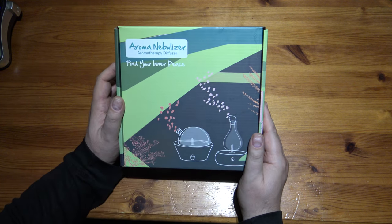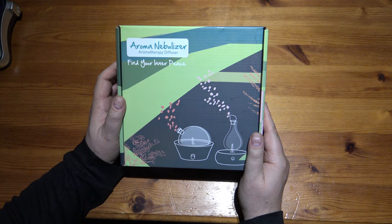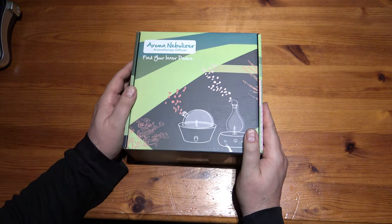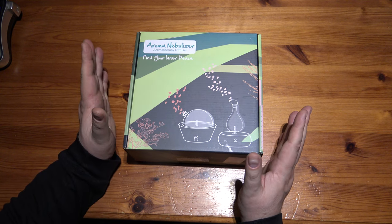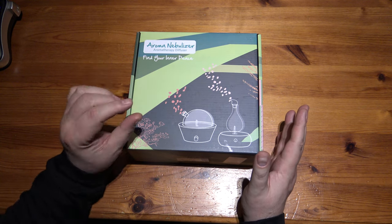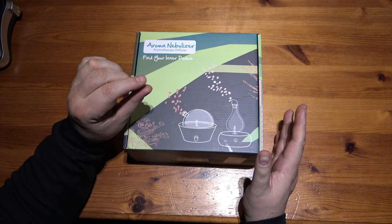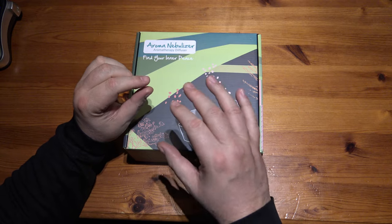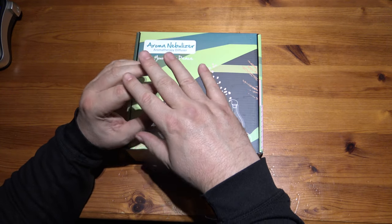Hello, welcome to another unboxing. This time, find your inner peace with an aroma nebulizer aromatherapy diffuser. There are quite a few different types on the market. The most common one has a little ceramic disc at the bottom that vibrates really fast with ultrasound. You put water in with your oil and it makes a mist.